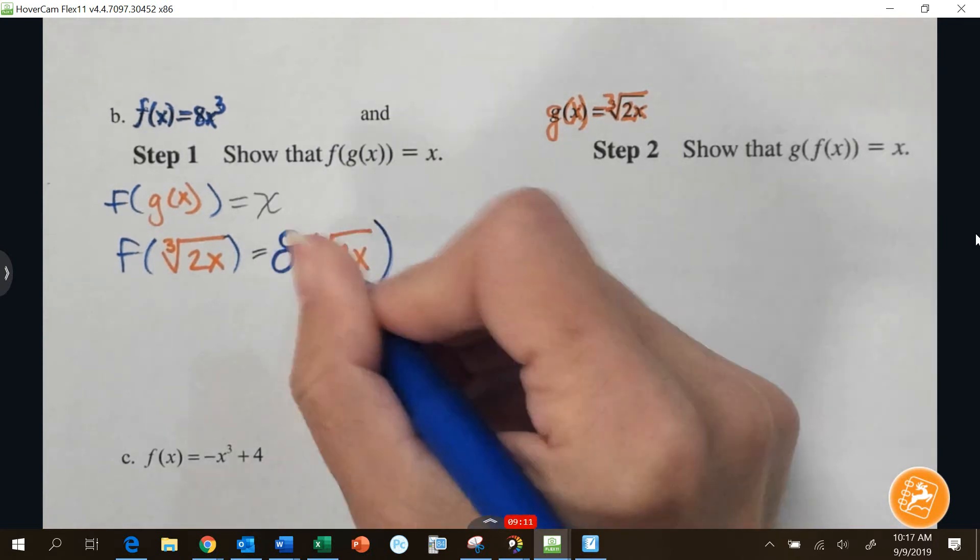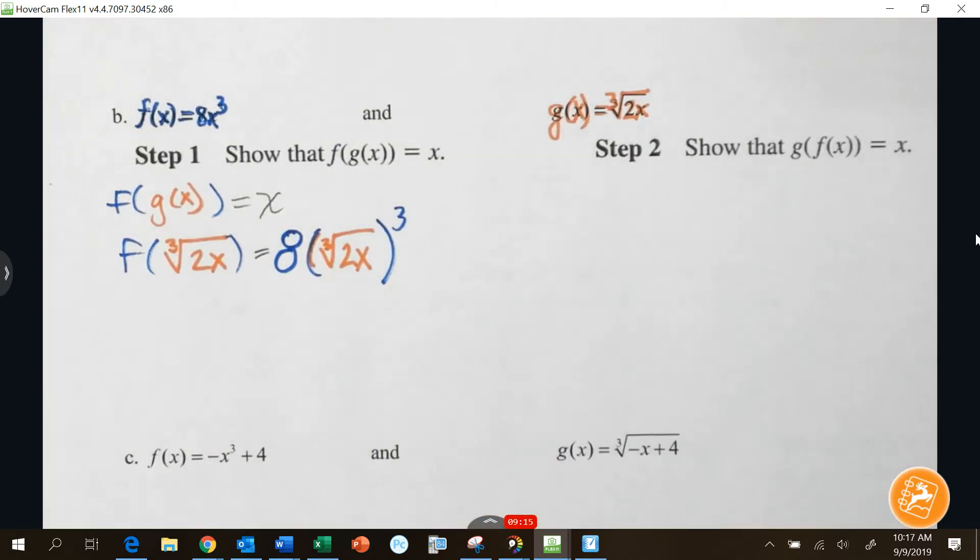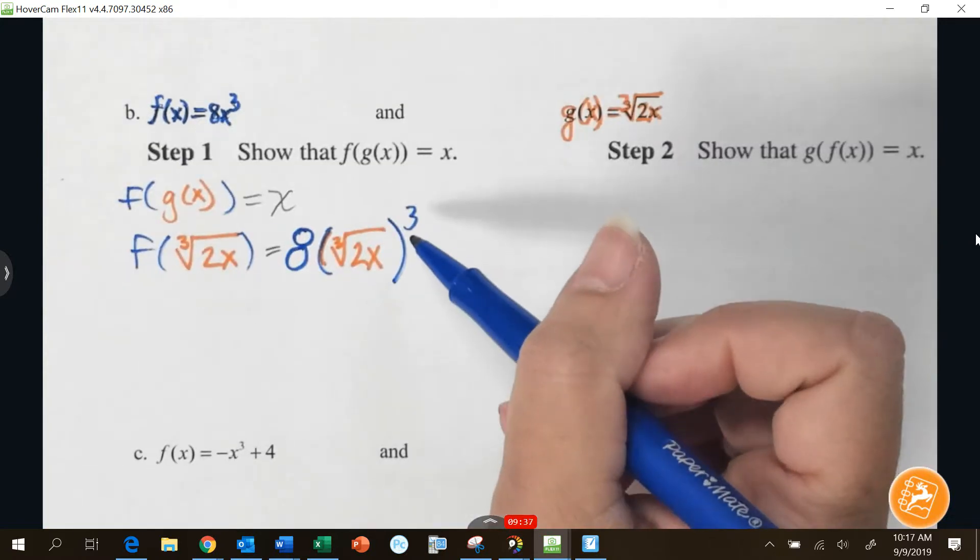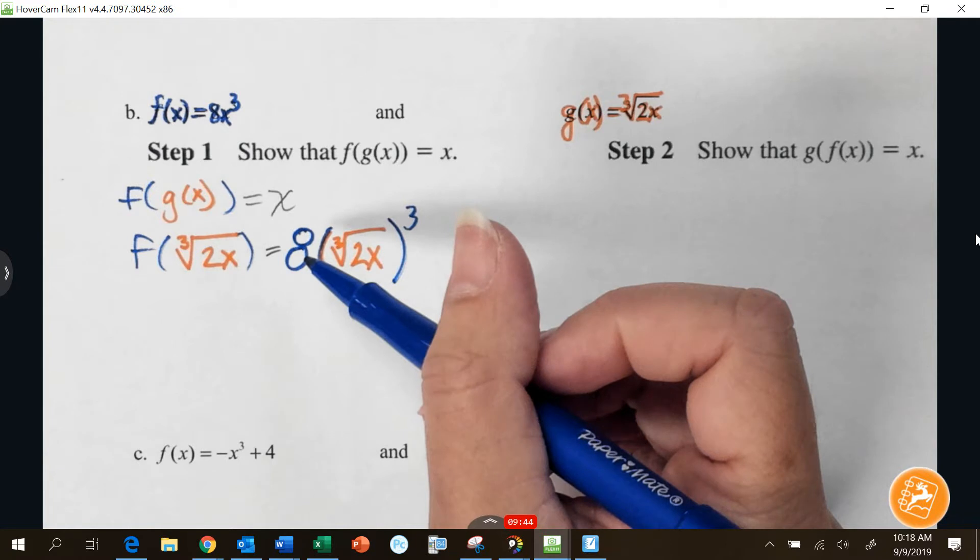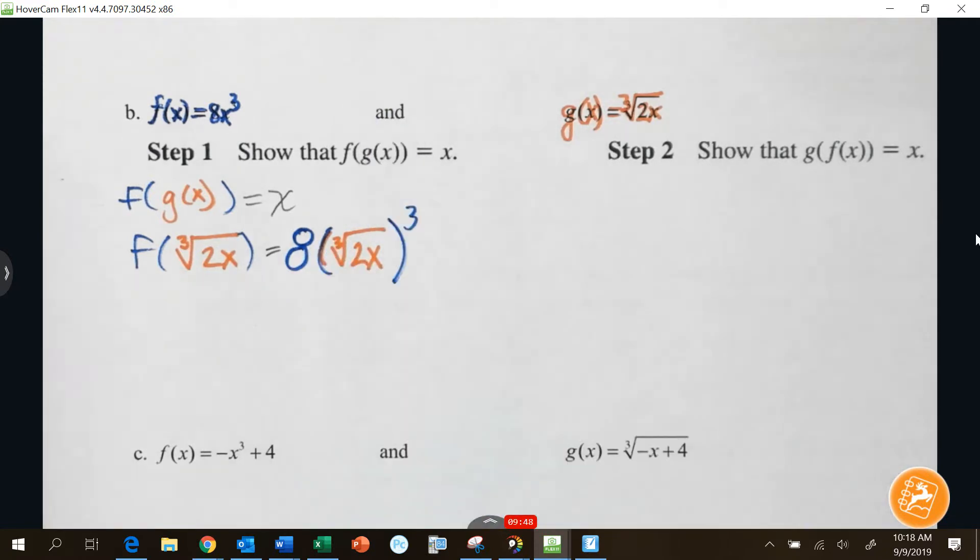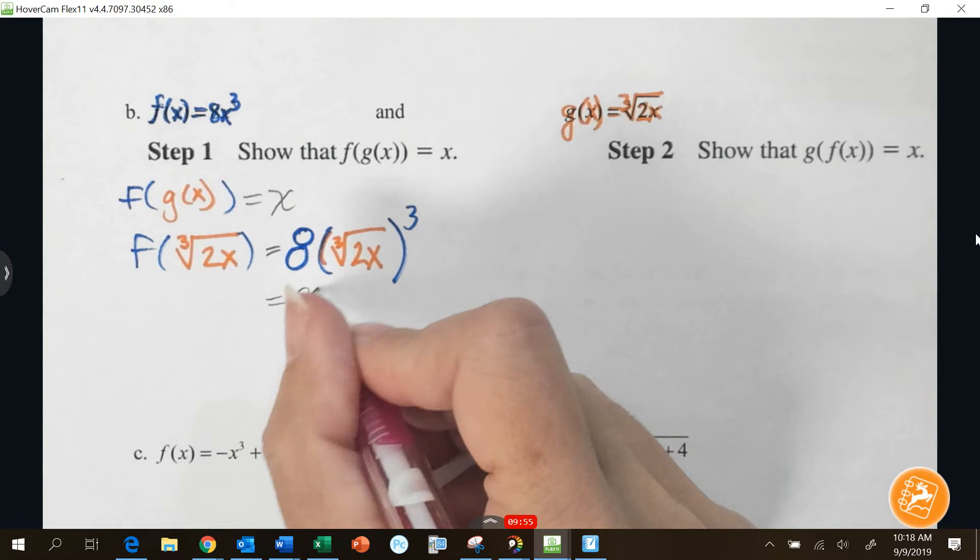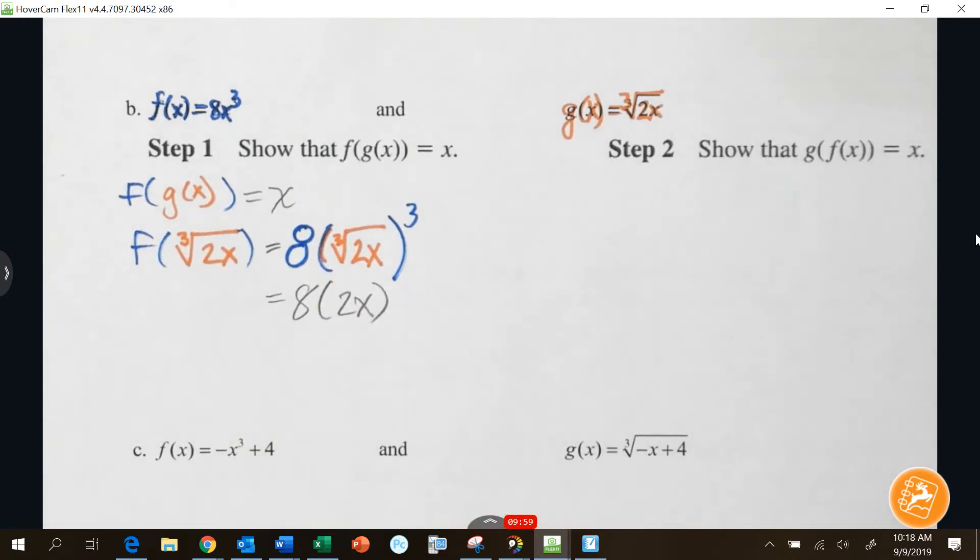So I'm going to start by doing f of, what is g? Cube root 2x. That means inside of the f equation, wherever I see an x, I'm going to make it into cube root 2x. And then outside of that x, I have all the equation the same. So I have 8, and then I have cube root 2x, which is taken to the third power. So we do our order of operations. What should I do first? Exponents? Okay. So I'm going to cube what? I'm cubing the cube root. Am I cubing the 8? Why not? Not in parentheses. Perfect. So I'm going to cube the cube root. And when you cube a cube root, those are inverse operations. What happens? You just get 2x.